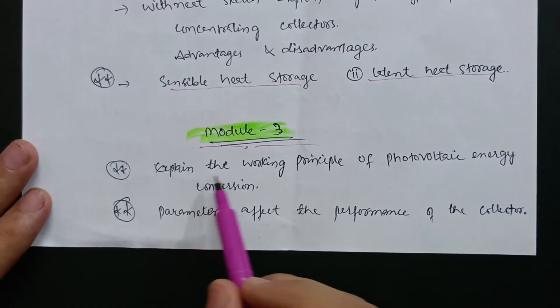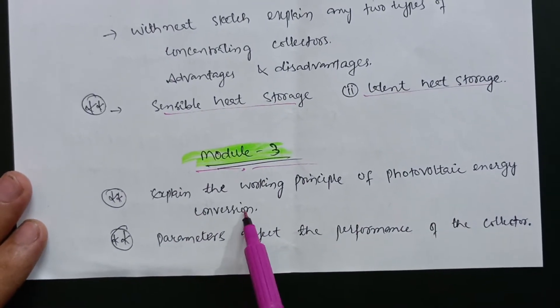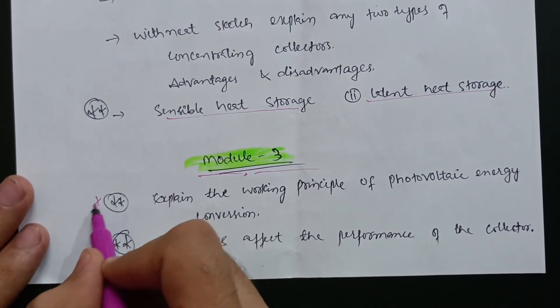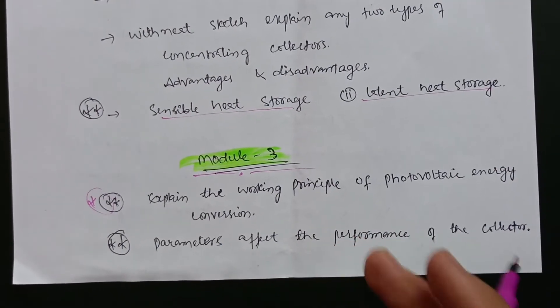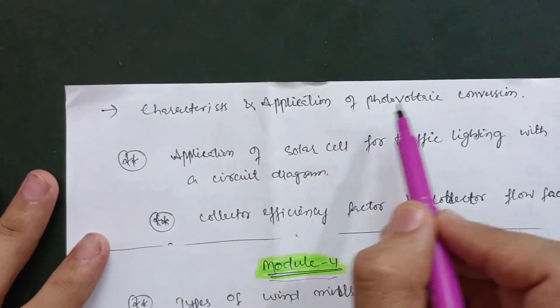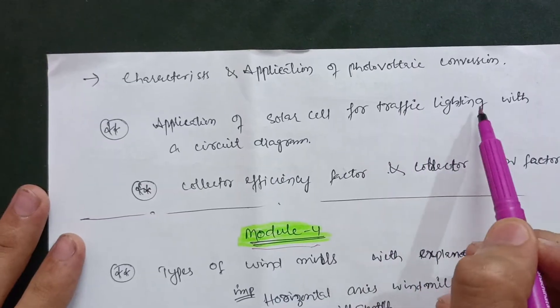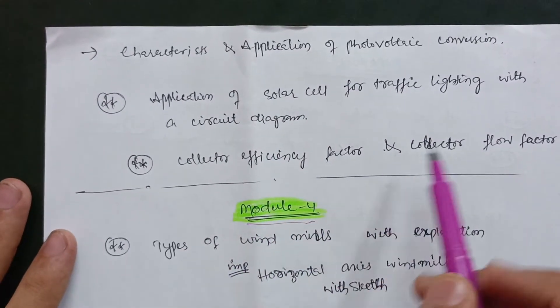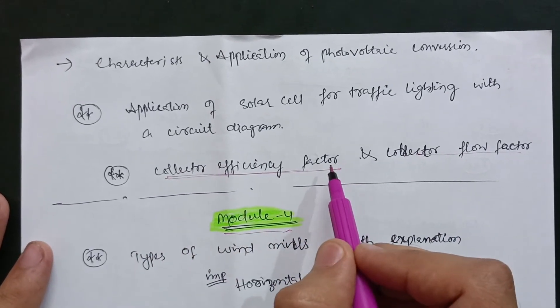In Module 3, the important questions are: explain the working principle of photovoltaic energy conversion, and the parameters affecting the performance of the collector. These two are the most important questions in Module 3. Also focus on characteristics and applications of photovoltaic conversion, application of solar cells for traffic lighting with a circuit diagram, and collector efficiency factor and collector flow factor.